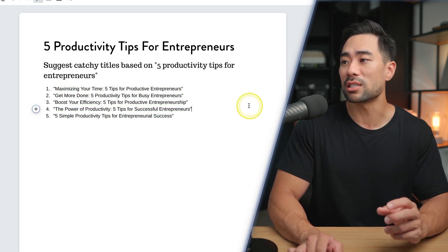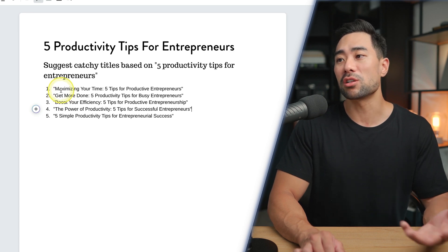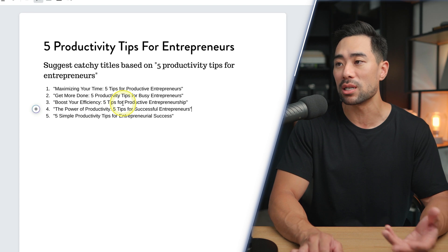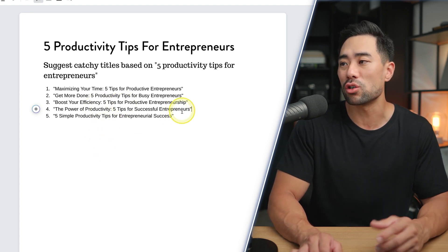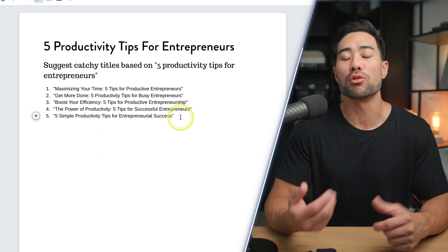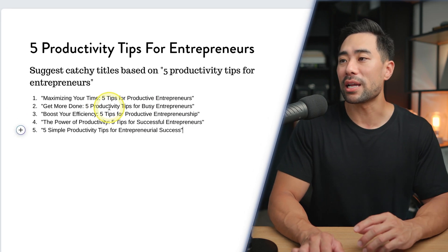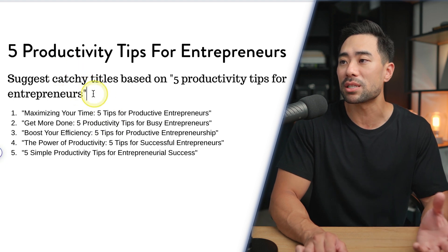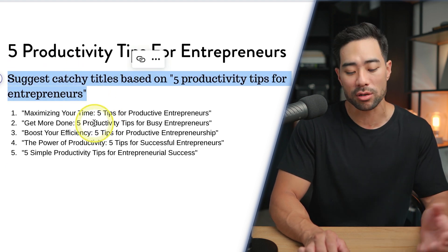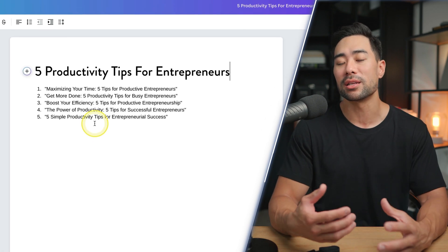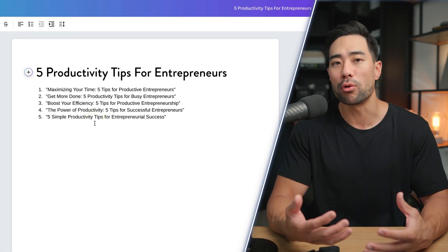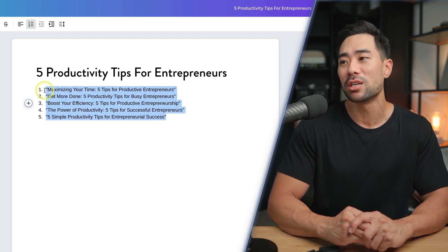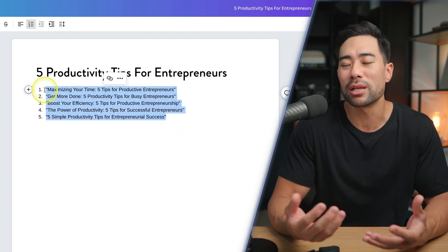Some suggestions include 'Maximizing Your Time: Five Tips for Productive Entrepreneurs.' You can pick and choose, or get more suggestions. One thing to note: after you enter a prompt, it keeps the prompt text right there on the page, so you need to delete it manually. I'm not sure why it doesn't automatically remove it — maybe for history purposes so you can see what prompt you used. The other way to trigger MagicWrite is to simply click the plus sign and then click on MagicWrite and enter your prompt there.